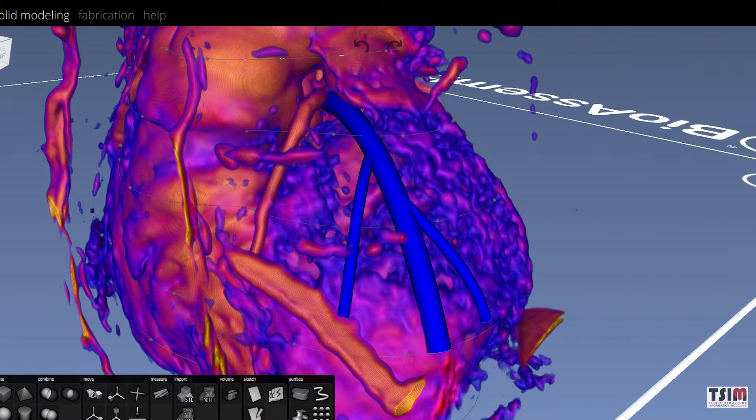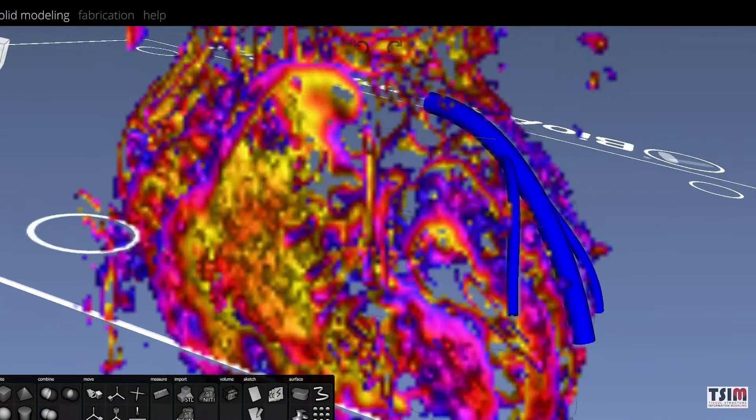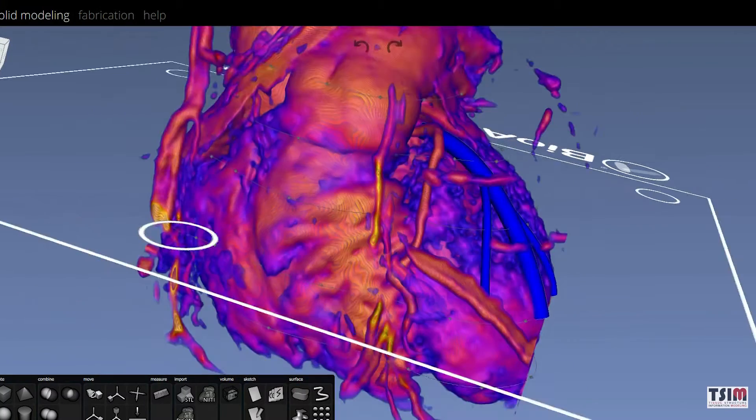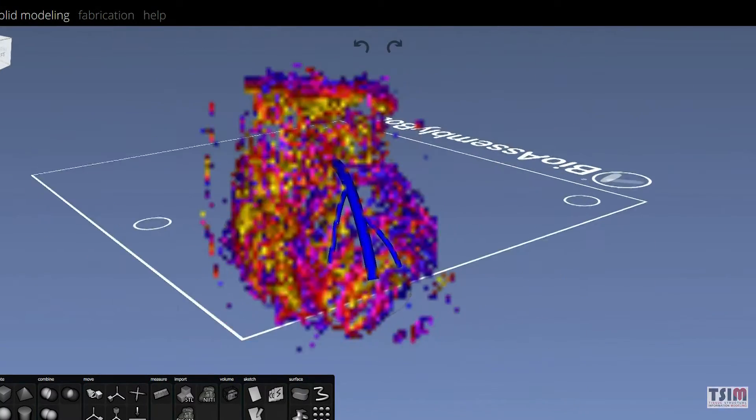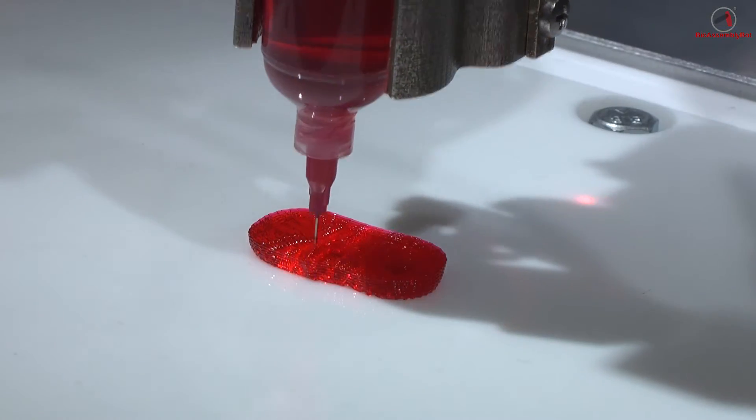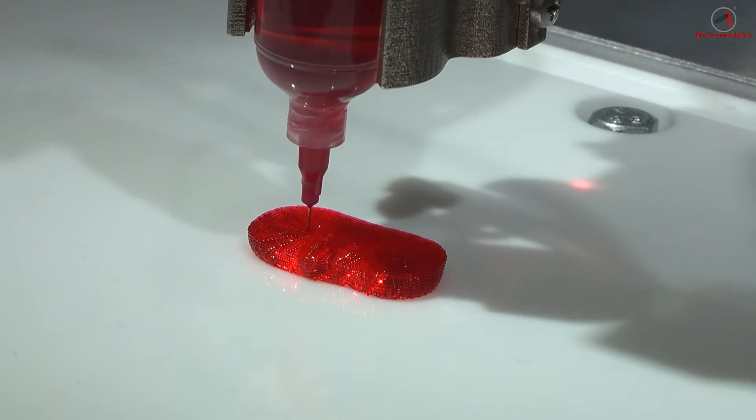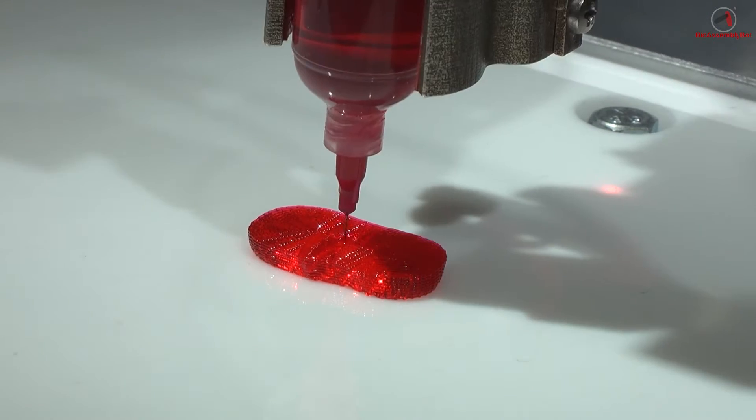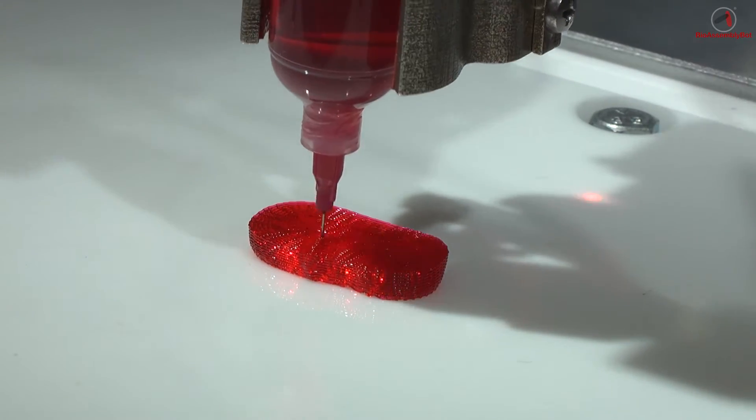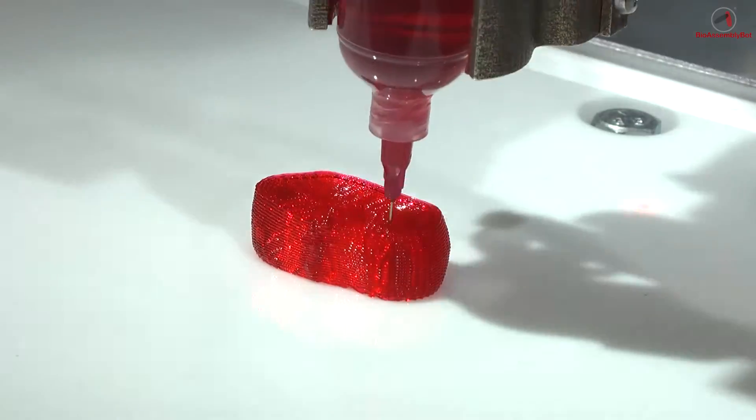In this particular example, we're highlighting the ability of BAB to print on curved surfaces. Earlier, an image of a patient's heart was imported into T-Sim, and the upper region of that heart was extracted within the T-Sim computer modeling environment.